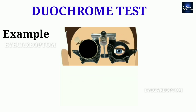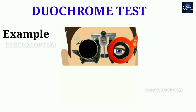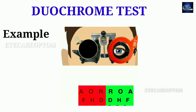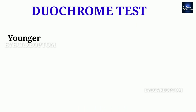For example: in subjective refraction, a patient had minus 2 diopters spherical. In the Duochrome test, green is clearer, so we add plus 0.25 — the patient still sees green clearer. We add another plus 0.25, and now the patient sees both equally clearly. So the final power is minus 2 diopters plus 0.50 diopters spherical, giving minus 1.50 diopters spherical.